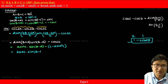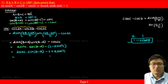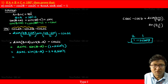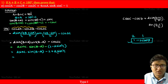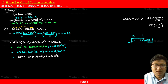Expanding the bracket carefully: 2 sin c sin(b minus a) minus 1 plus 2 sin² c. Now sin c is common in the first and third terms, so we factor: 2 sin c times sin(b minus a) plus 2 sin² c, minus 1. Taking 2 sin c as common: 2 sin c times [sin(b minus a) plus sin c], minus 1.